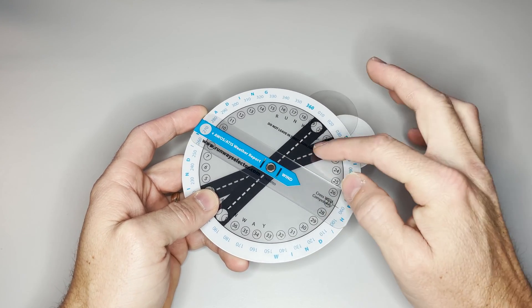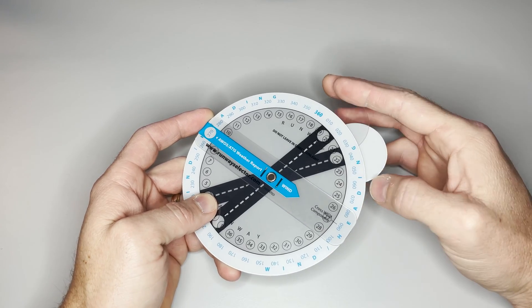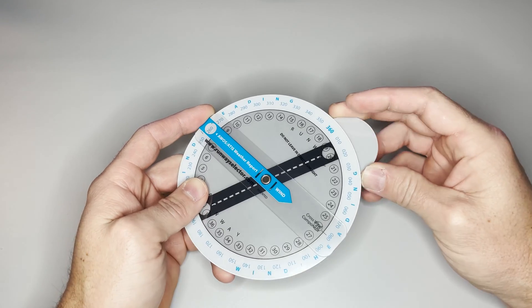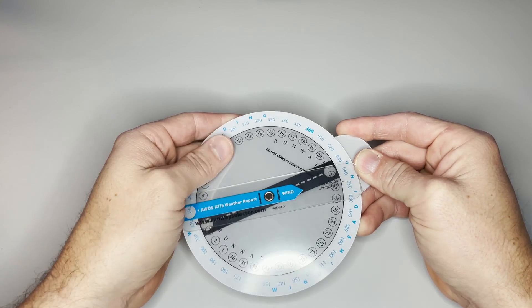It does have two runway indicators on it. If you're using this at an airport with just one runway, you can put the two half moons together and use it like this.